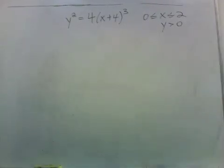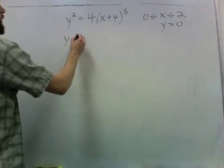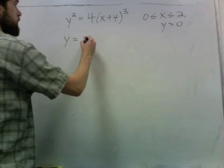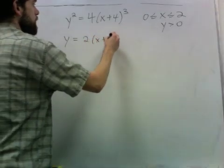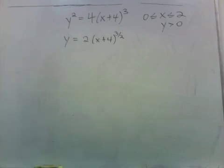Suppose we have the graph defined by this equation, and we want to find the arc length as x goes from 0 to 2. We're told y is positive, so if we take the square root of this, we take the positive square root and get y is just that.